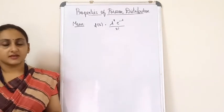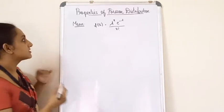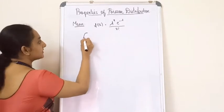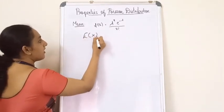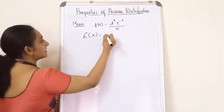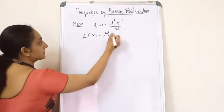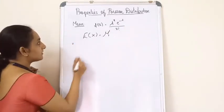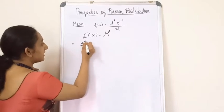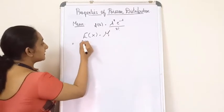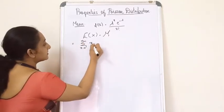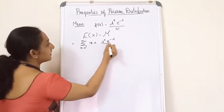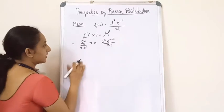Let's start with the mean of the Poisson distribution. To find the mean, we take expectation of x, denoted μ₁'. So μ₁' = E[X] = Σ (x=0 to ∞) x · λ^x · e^(−λ) / x!.